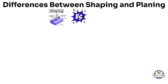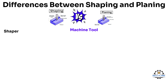Differences between shaping and planing. Feature — machine tool: Shaping operation is performed in a machine tool called a shaper, also called a shaping machine. Planing operation is performed in a machine tool called a planer, also called a planer machine.